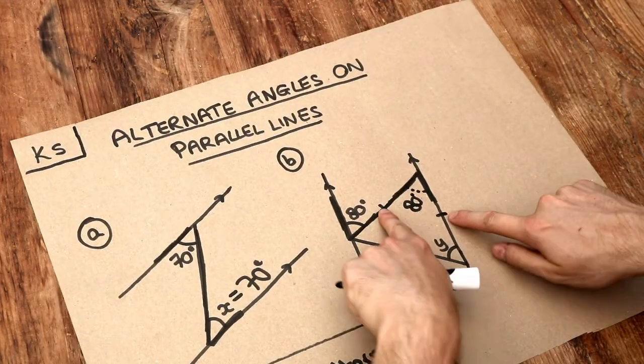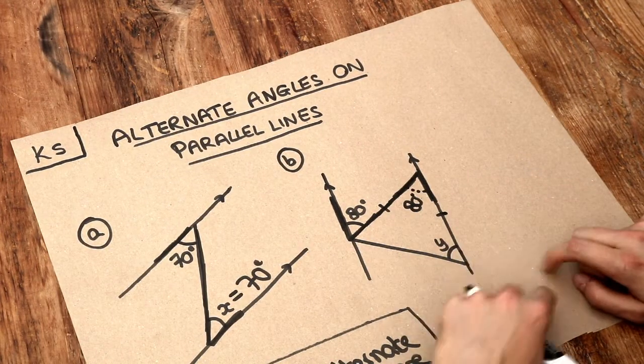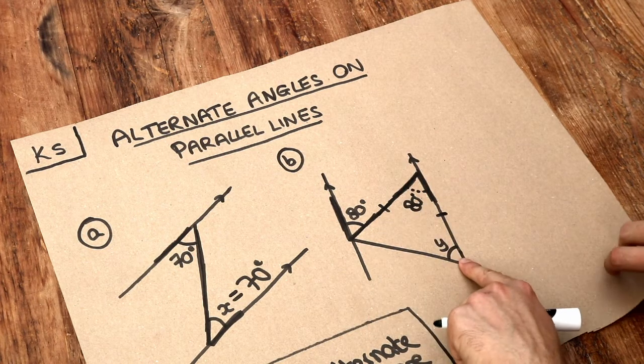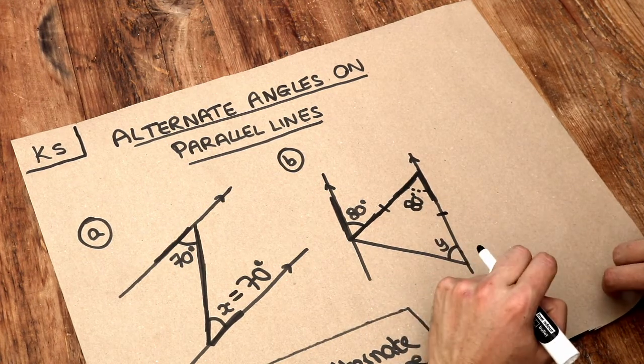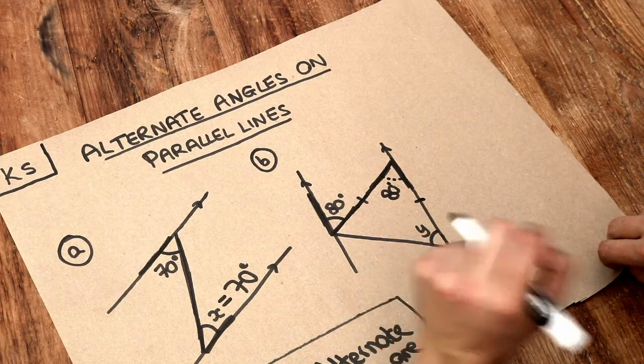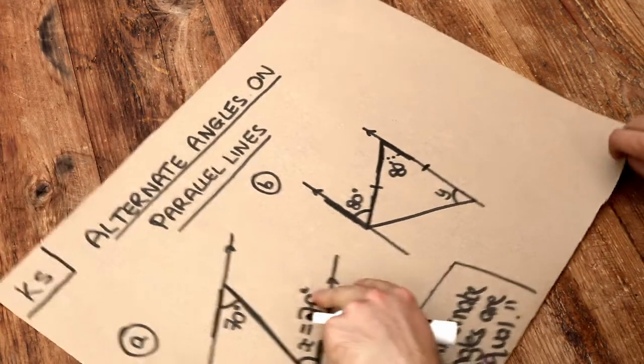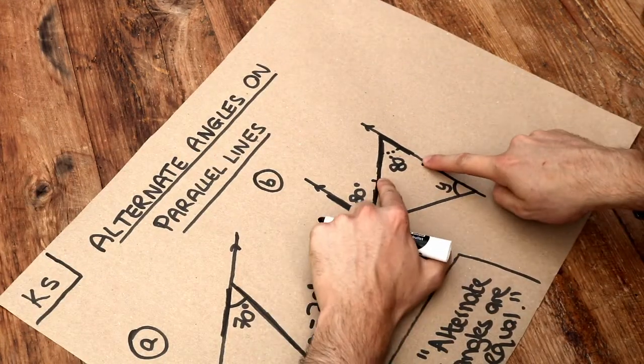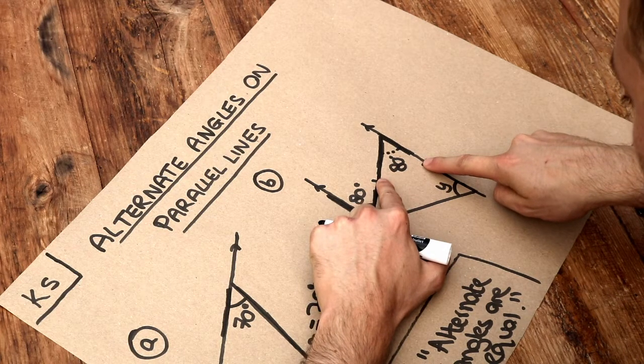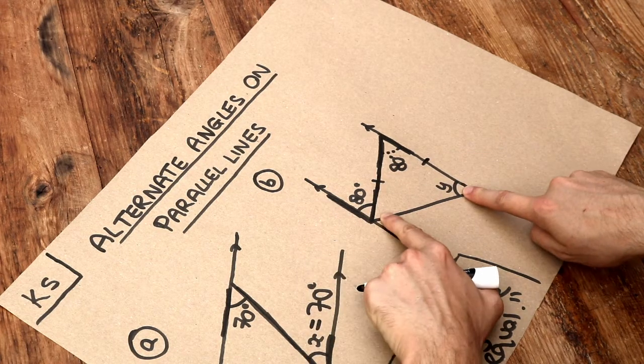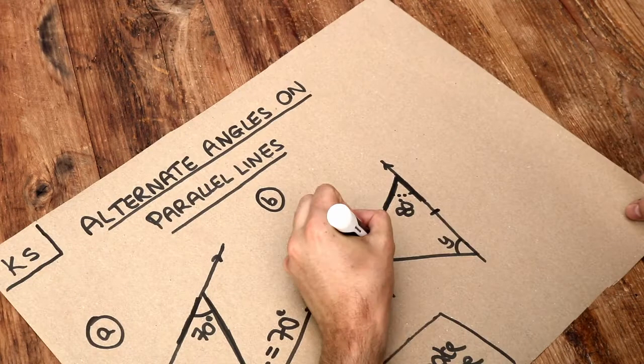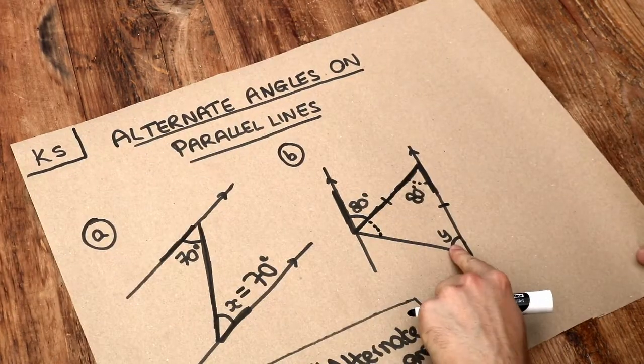Now, notice I've put two marks here on this triangle, and that means that length is the same as that length. That means we have an isosceles triangle. The way I identify the angles which are the same in the isosceles triangle is to put my two fingers on the marks and slide my fingers away. We can see it must be these two angles which are equal. So this angle here is the same as that.